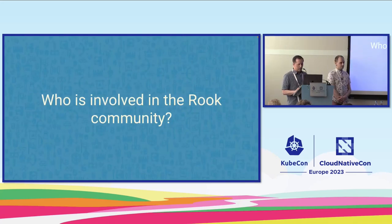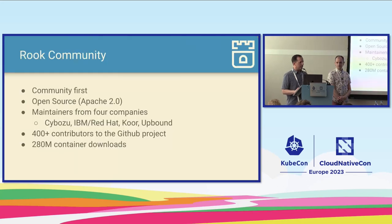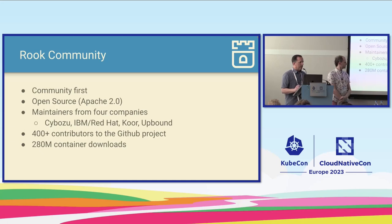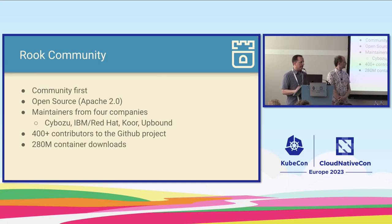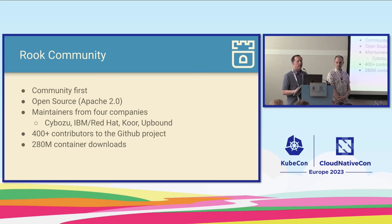Let's talk about the Rook community. From the start, we wanted to build an open source project under Apache 2 license. We have maintainers across four companies currently—IBM, Core Technologies, Saibosu, and Upbound—with a steering committee and cross-company collaboration. We've had over 400 contributors to the GitHub project, and according to Docker Hub metrics, 280 million container downloads.